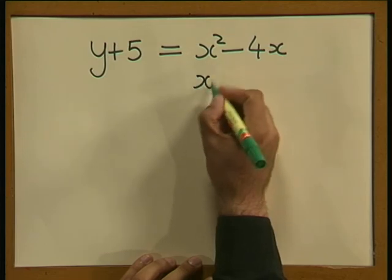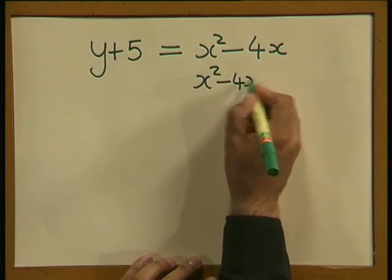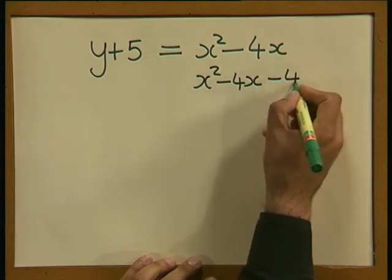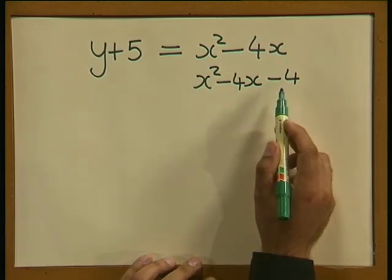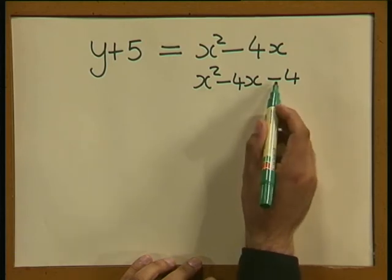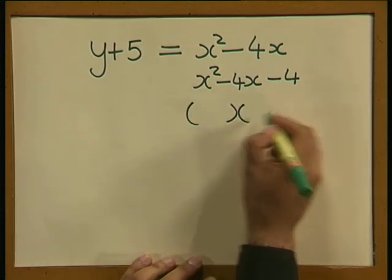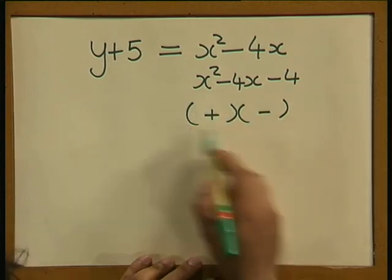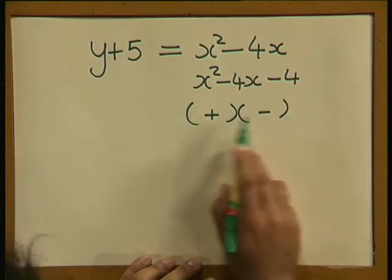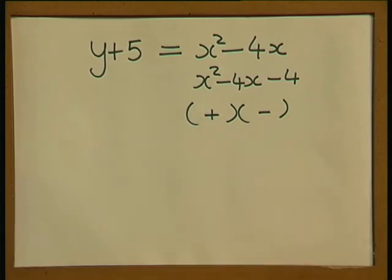Will x squared minus 4x minus 4 factorize perfectly? Well, no, because you should remember that the last minus tells us that the two brackets will have different signs. And we don't want that. We want two identical brackets. Will x squared minus 4x plus 4 factorize perfectly? Let's try.